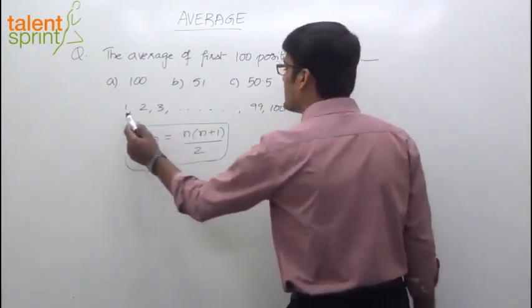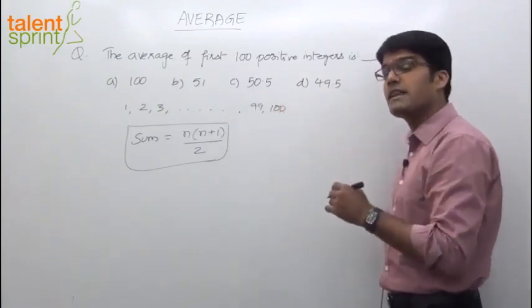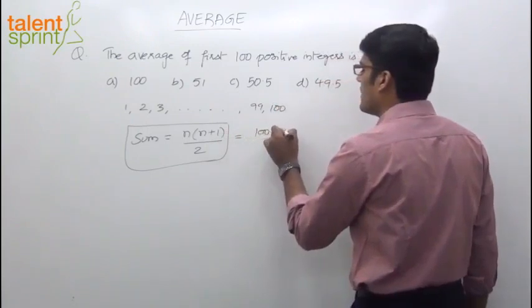Here you have to take the sum of first 100 natural numbers. These are all natural numbers, starting from 1 up to 100. So first 100 natural numbers. What will be the sum? 100 into 101.